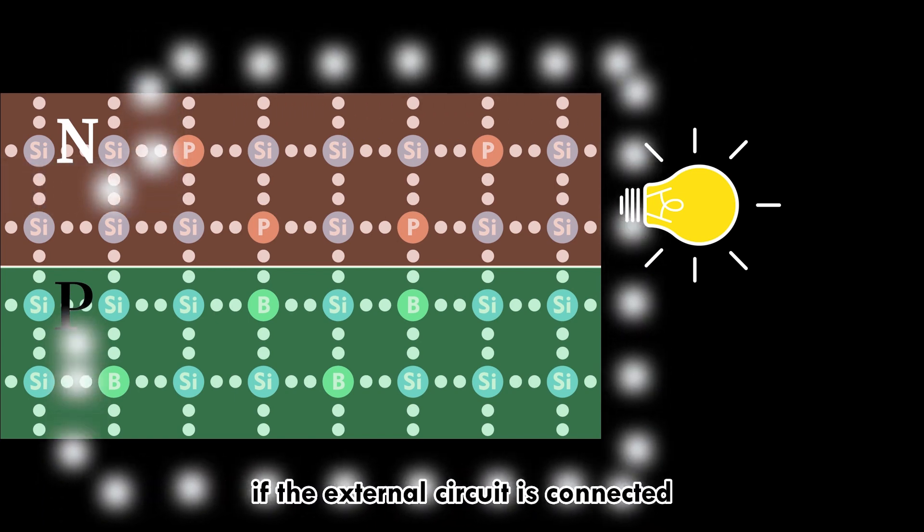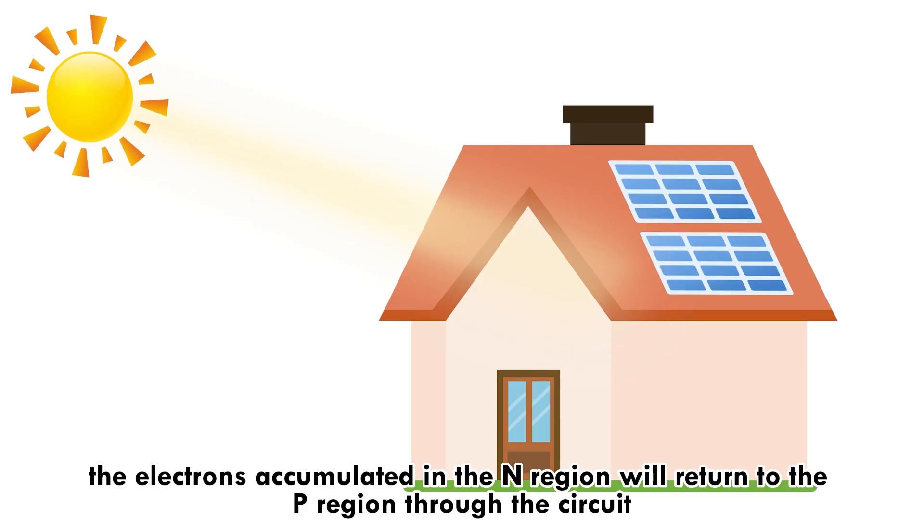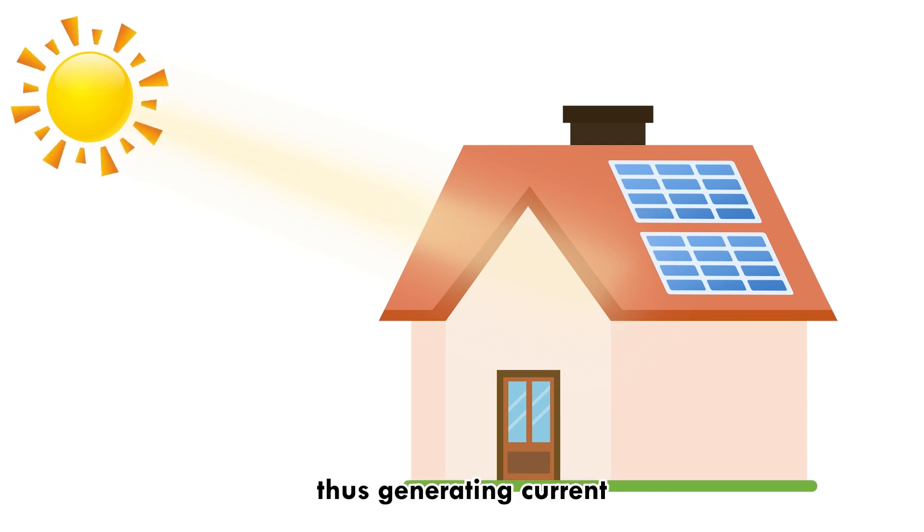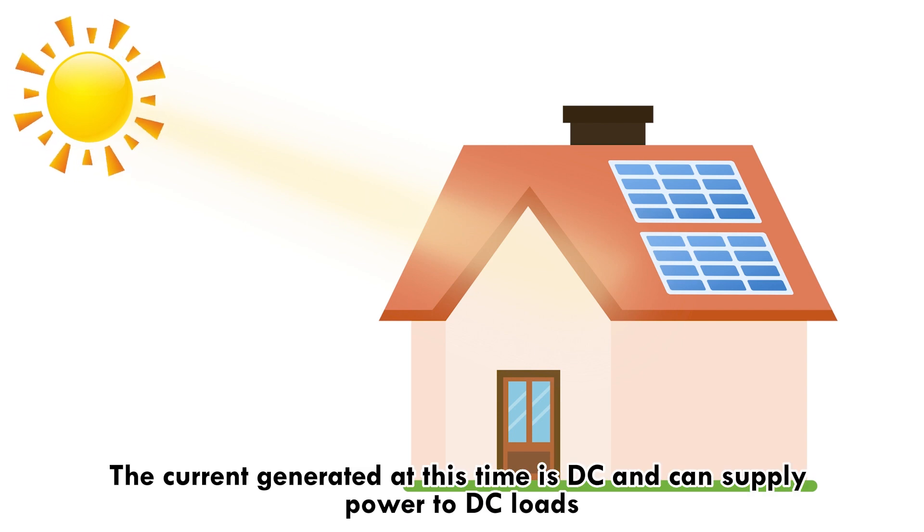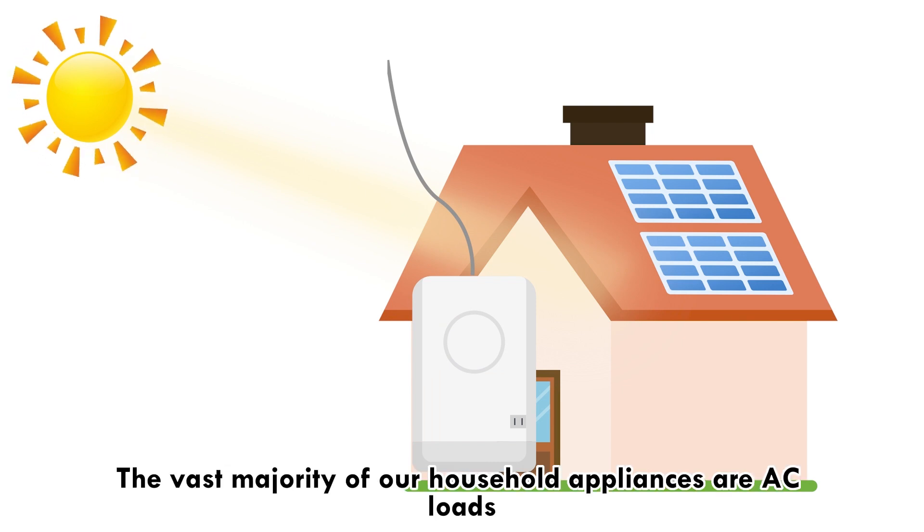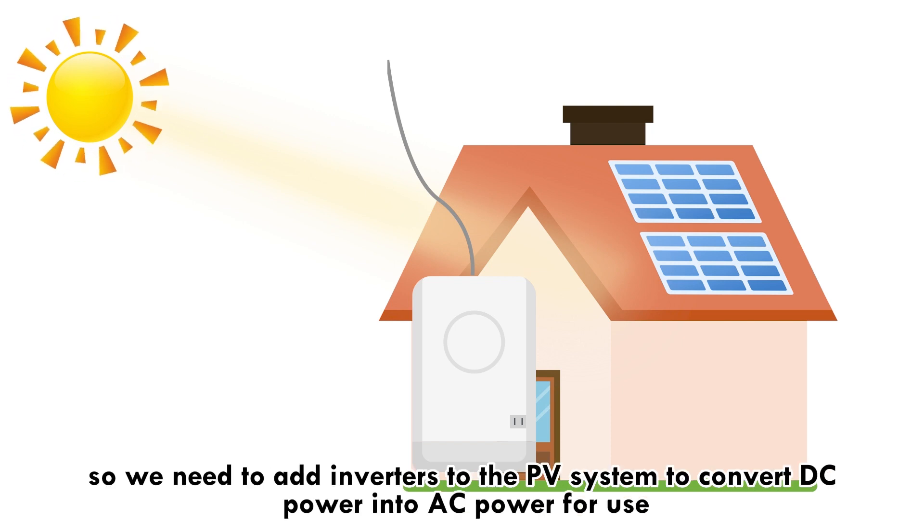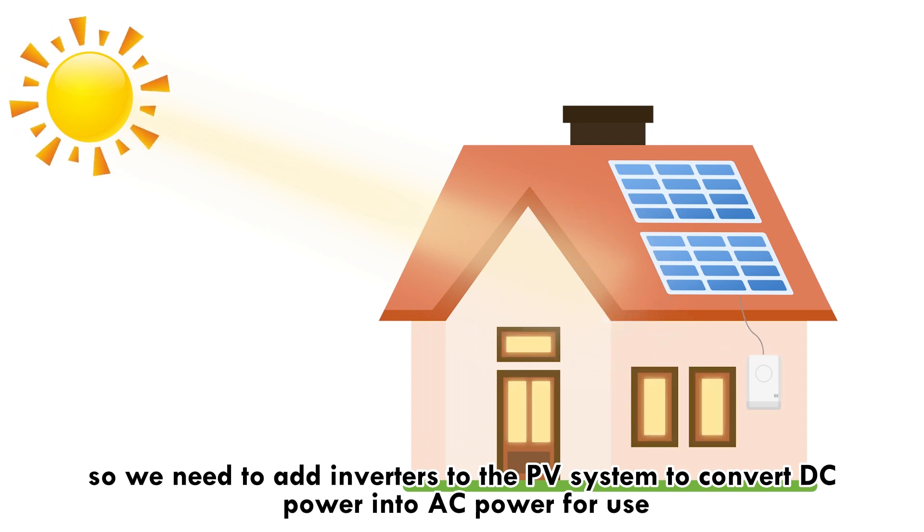if an external circuit is connected, the electrons accumulated in the n region will return to the p region through the circuit, generating current. The current generated is DC and can supply power to DC loads. The vast majority of household appliances are AC loads, so we need to add inverters to the PV system to convert DC power into AC power for use.